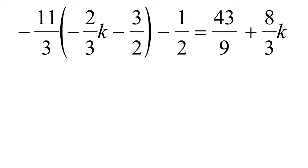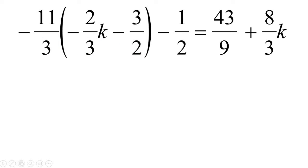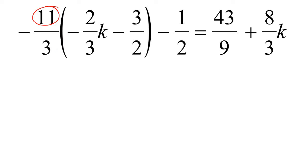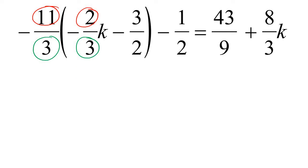Here's our next example, and what we can see is that there's definitely a whole bunch of fractions, so it's definitely a question with fractions, and then we also have a bracket. What I suggested in the previous example is let's get rid of the brackets first. So we'll have to multiply this fraction into the bracket. The top must multiply with the top and the bottom multiplies with the bottom.